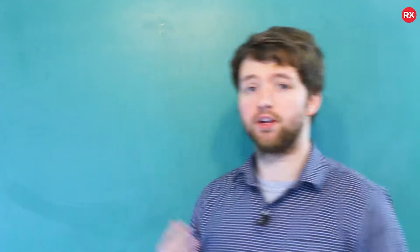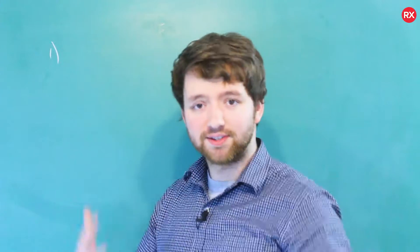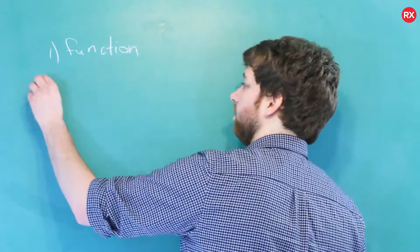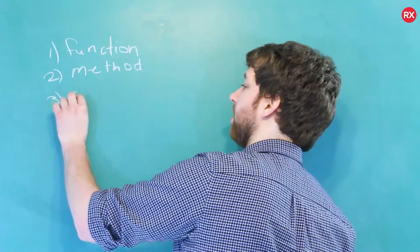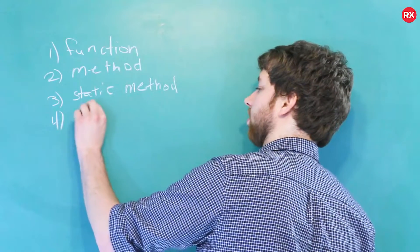In this video, we're going to talk about four types of functions. So number one is the basics, a function. Number two is a method. Number three is a static method. And number four is a constructor.